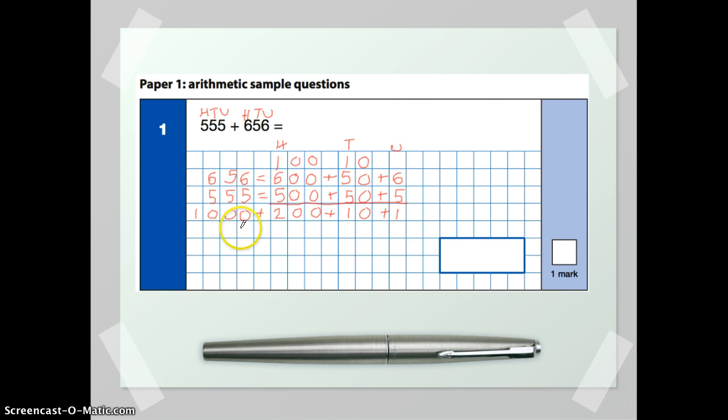And if we're going to lay out our final number, one way we could do it is we could lay it out just like this. So we've got thousands, our hundreds, our tens, and our units.